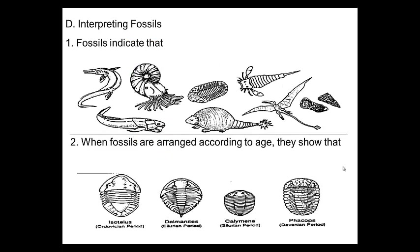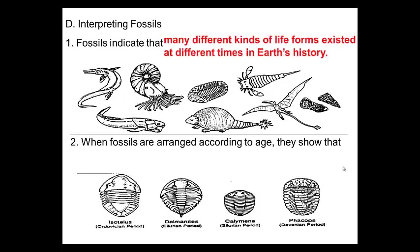Let's take a look at interpreting fossils. I wouldn't worry too much about the fossil types for questions, but it is good to know the different ways things can be preserved. Number one: fossils indicate that many different kinds of life forms existed at different times in Earth's history — everything from dinosaurs to single-cell organisms to humans.